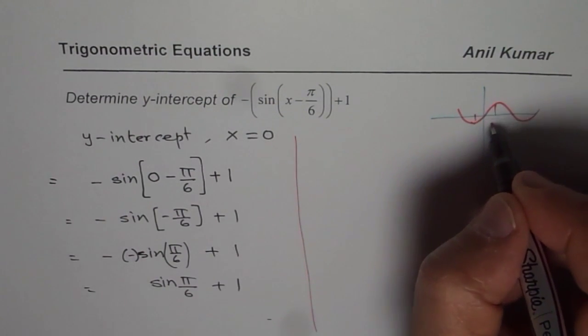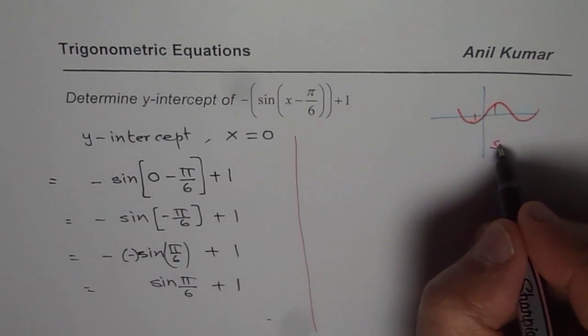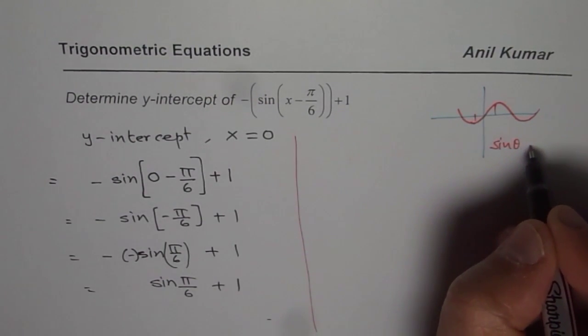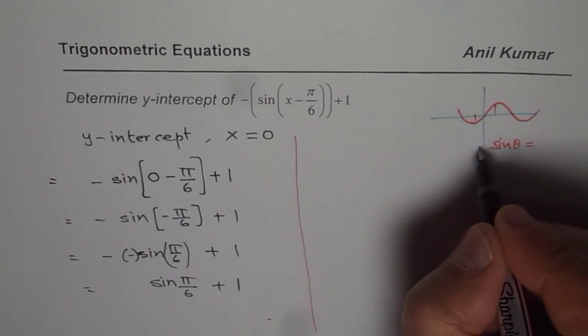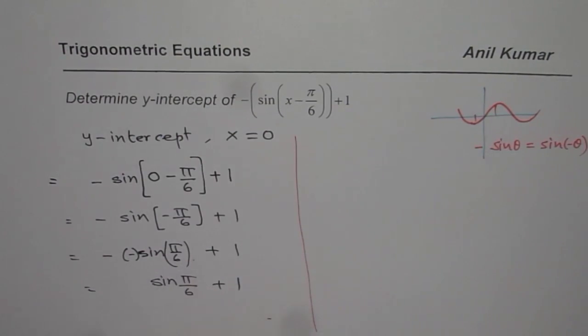These values are symmetric. So sine of minus θ is the same as minus sine of plus θ. They are symmetric. So we know sine of minus θ equals to minus sine θ. That is what we used here.